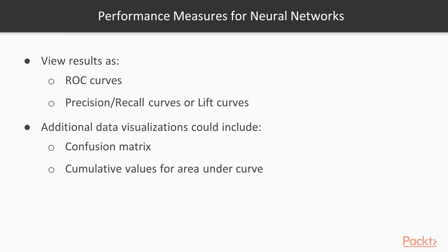There are several performance measures for neural networks. You can view the results as receiver operator characteristic (ROC) curves, precision recall curves, or lift curves. Additional data visualisations could include a confusion matrix and cumulative values for the area under the curve.